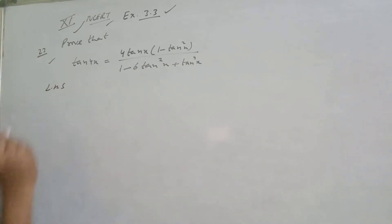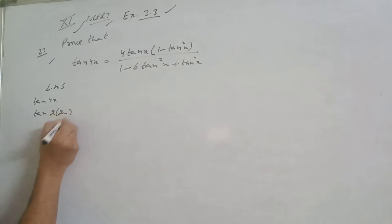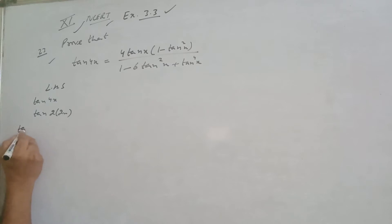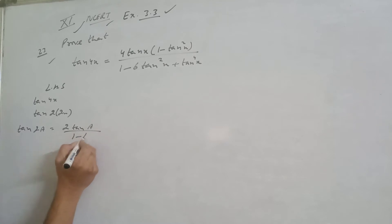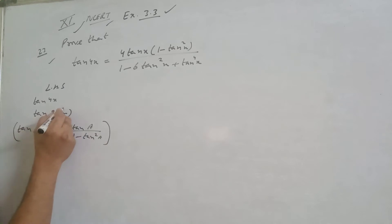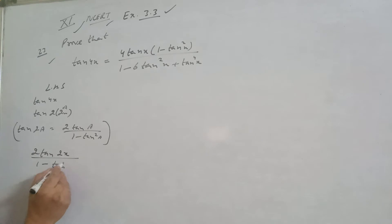Let's start with the left hand side. What is tan 4x? We write it as tan 2 into 2x. Now, what is the identity of tan 2a? It is 2 tan a upon 1 minus tan square a. Here a is 2x, so we get 2 tan 2x upon 1 minus tan square 2x. I hope it is clear.